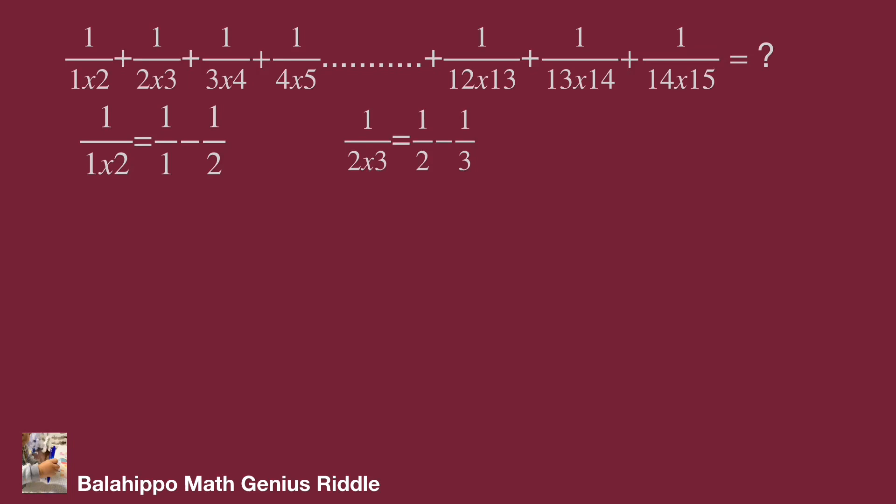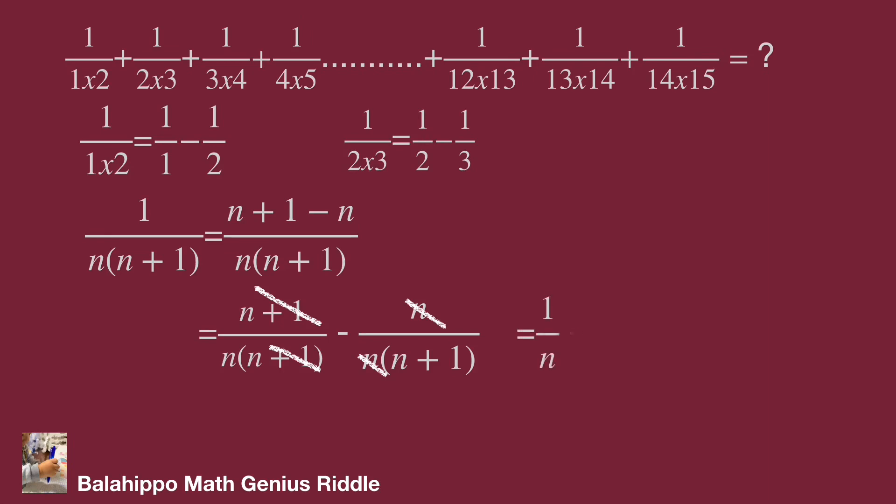But why? We can see from 1 over 2 times 3, add n and then minus n in the numerator. Separate it into two quantities. Eliminate n plus 1 in first quantity and n in second quantity. Simplify the equation becomes 1 over n minus 1 over n plus 1.